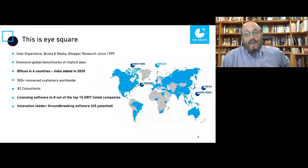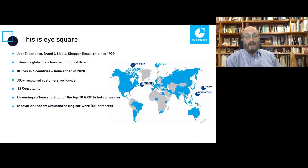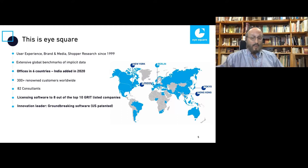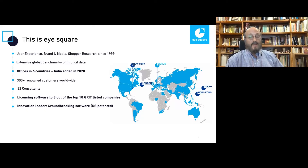Overview of iSquare. iSquare was founded in 1999 in Berlin, Germany, where our global headquarters are located. We have offices in London, Hong Kong, and Tokyo. We opened the India office in 2020, and the New York office I launched in September 2017. We have three areas of expertise: user experience, brand and media experience, and shopper experience. We have one of the most extensive global benchmarks for implicit data — this is our 23rd year. We have groundbreaking software, a U.S. patent, and we work in over 60 countries. Our technology is licensed by eight of the top 10 companies listed in the Grit Innovative Companies.